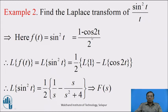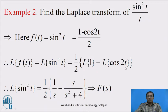By taking Laplace Transform on both sides, we get Laplace Transform of f(t) equals Laplace Transform of sin²(t) equals (1/2) times [Laplace Transform of 1 - Laplace Transform of cos 2t] using the linear property. Therefore, Laplace Transform of sin²(t) equals (1/2) × [1/s - s/(s² + 4)]. This result is denoted by F(s).